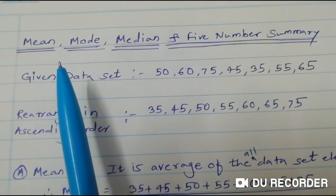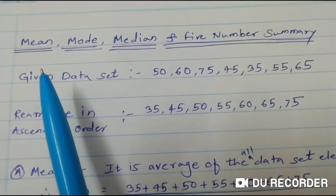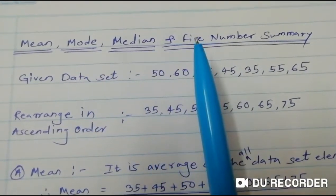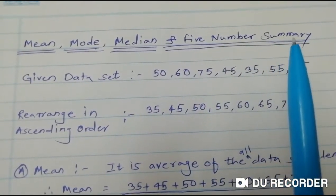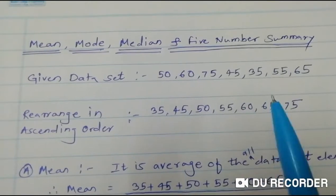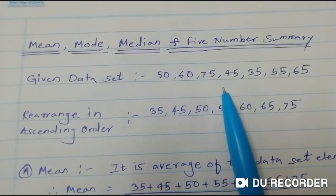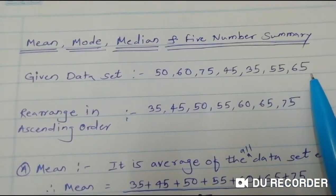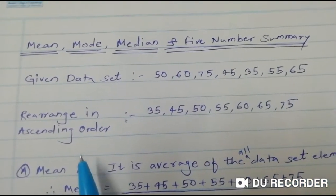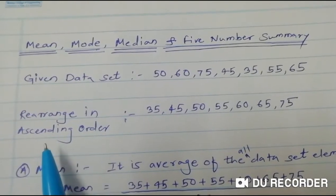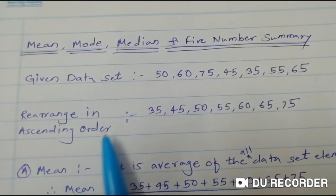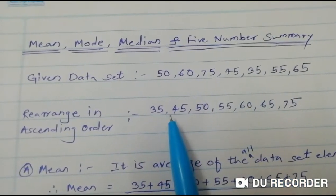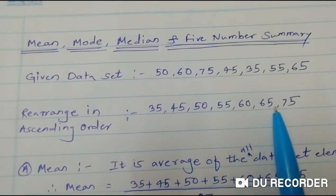Hello friends. In this lecture we are going to study how to calculate mean, mode, median, and five number summary of a given data set. In an exam, such data set elements will be given. The first step we have to do is rearrange the given data set in ascending order. So for that purpose, the given data set has been rearranged in ascending order.